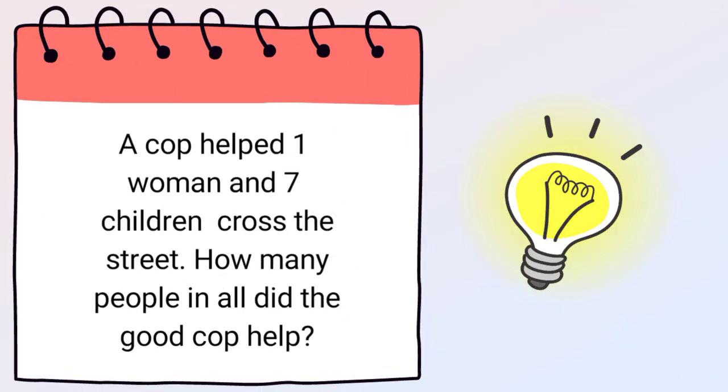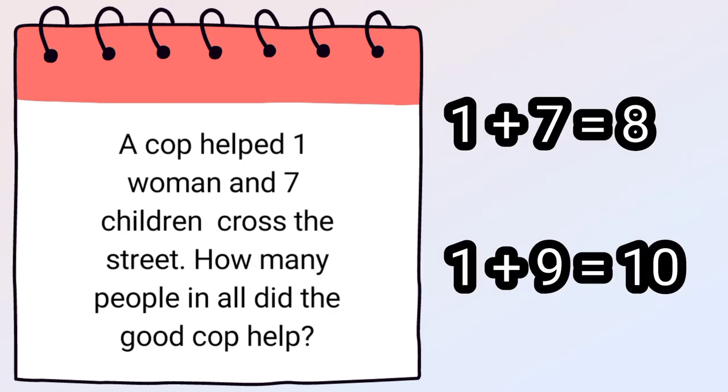A cop helped one woman and 7 children cross the street. How many people in all did the good cop help? What is the correct addition sentence for the story problem? Right! 1 plus 7 equals 8.